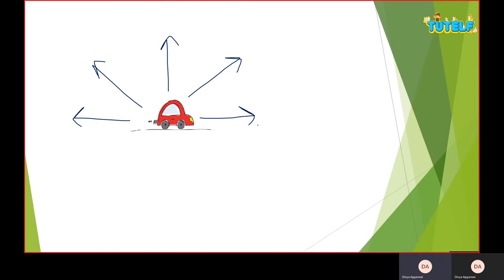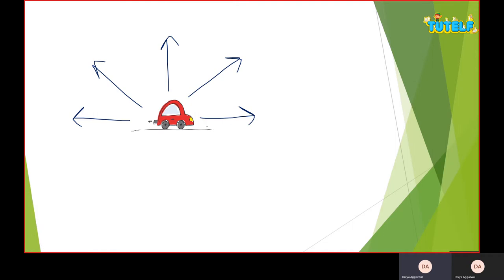Now if I say that you have to travel two kilometers in the east direction, then we know exactly where to go. Let me change the pen so you get the idea — I will know that I have to go two kilometers east, in this direction.